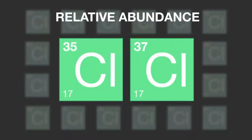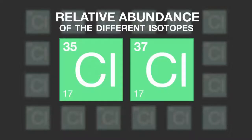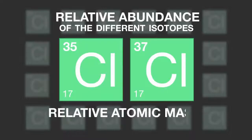The relative abundance of the different isotopes — in other words, how common they are — is always taken into consideration when calculating the relative atomic mass of an element.